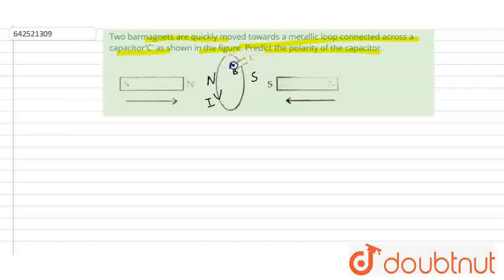So, plate A will become positive and plate B is negative. So, this is the answer. A is the positive plate and B is the negative plate.